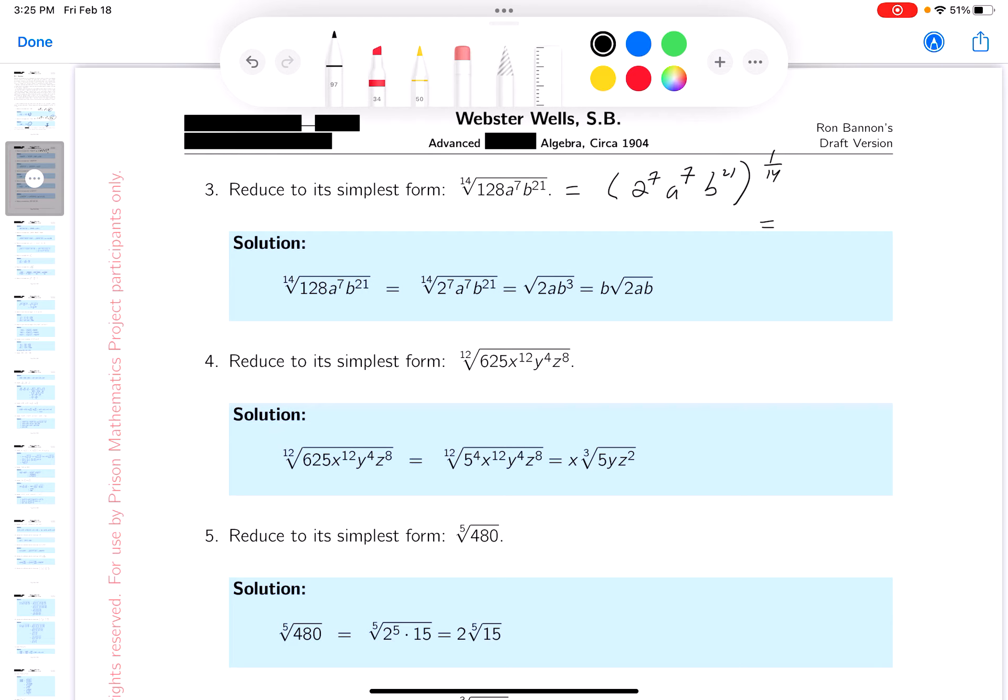That's going to be 2 to the 1/2 times, let's see, that would be 8 to the 1/2, right? That's pretty simple.